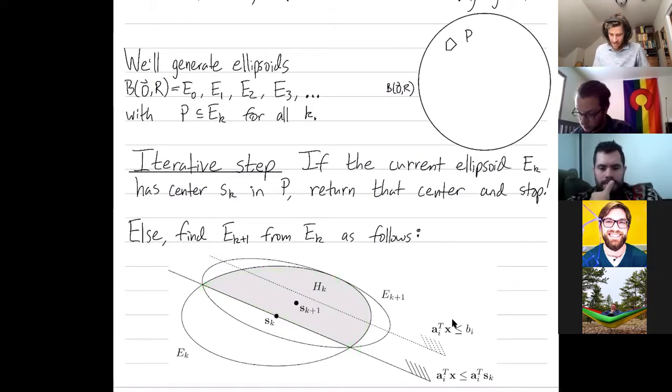All right, in summary, we're at an ellipse epsilon e sub k. Its center is not in the feasible region, but this ellipse contains a feasible region. Since the center is not in the feasible region, there's some constraint separating it from the feasible region. You could use that constraint, but it's easier to implement if you just translate that constraint to make it slightly weaker going through the center.